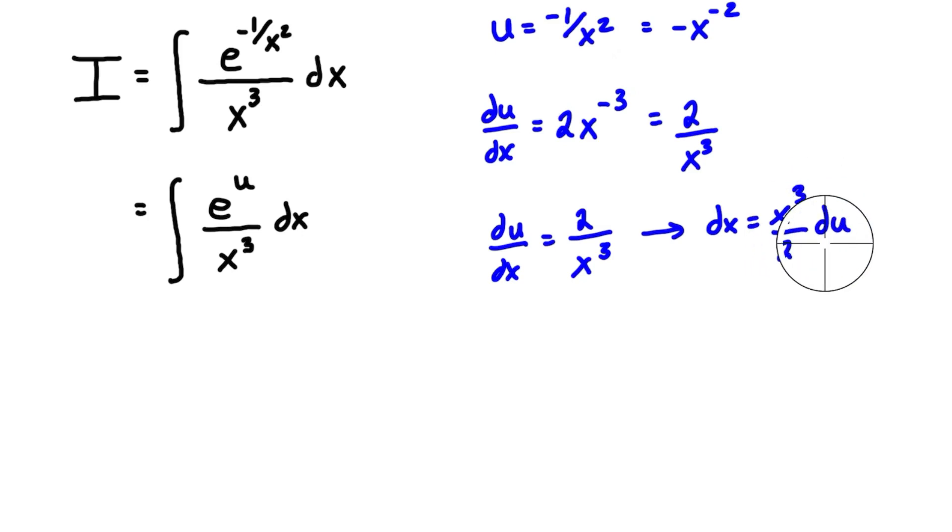Now what we're going to do is we have this expression for dx, and it has some x's and du's in it, but we're going to put it in here in place of this dx, we're going to substitute that in. So when we do that, we have this integral of e to the u over x to the power of 3, and we sub this in, we have times x to the 3 over 2 du. And now we can see we can cancel out this x to the power of 3 top and bottom, we can pull out that 2, it's a constant, so we have 1 over 2 times the integral of e to the u du.